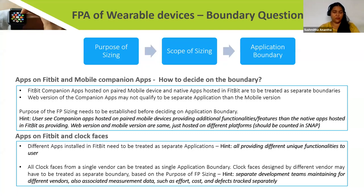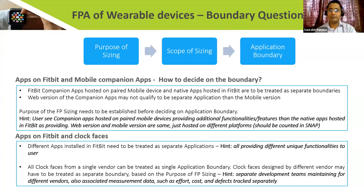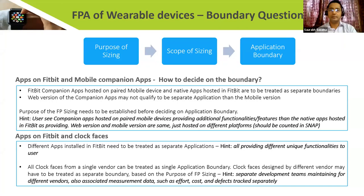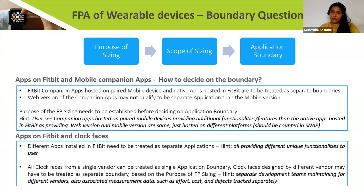Another consideration is about applications running on the Fitbit device — it generally has independent applications installed such as Spotify, exercise applications, and weather applications — all with their own independent purpose. We identify these independent applications as different boundaries. There are also things called clock faces, which are home screens. Different vendors bundle multiple clock faces and deliver them as a complete bundle, which we club into one application boundary. If two vendors deliver different bundles, we classify them as different boundaries because they may use different technology and tools. However, these are not thumb rules — case by case, depending on the purpose, you have to analyze and determine the app boundary placement.